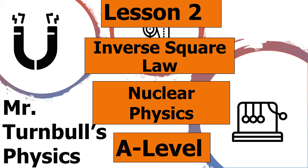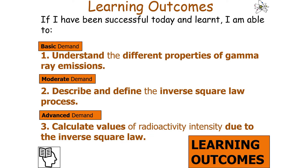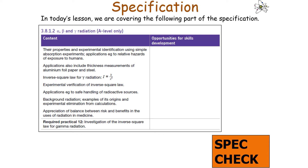Hello, and welcome to this lesson on the inverse square law, which is part of the nuclear physics topic in AQA A-level physics. In today's lesson on the inverse square law, we're going to look at describing the inverse square law, covering specification point 3.8.1.2: alpha, beta and gamma radiation.